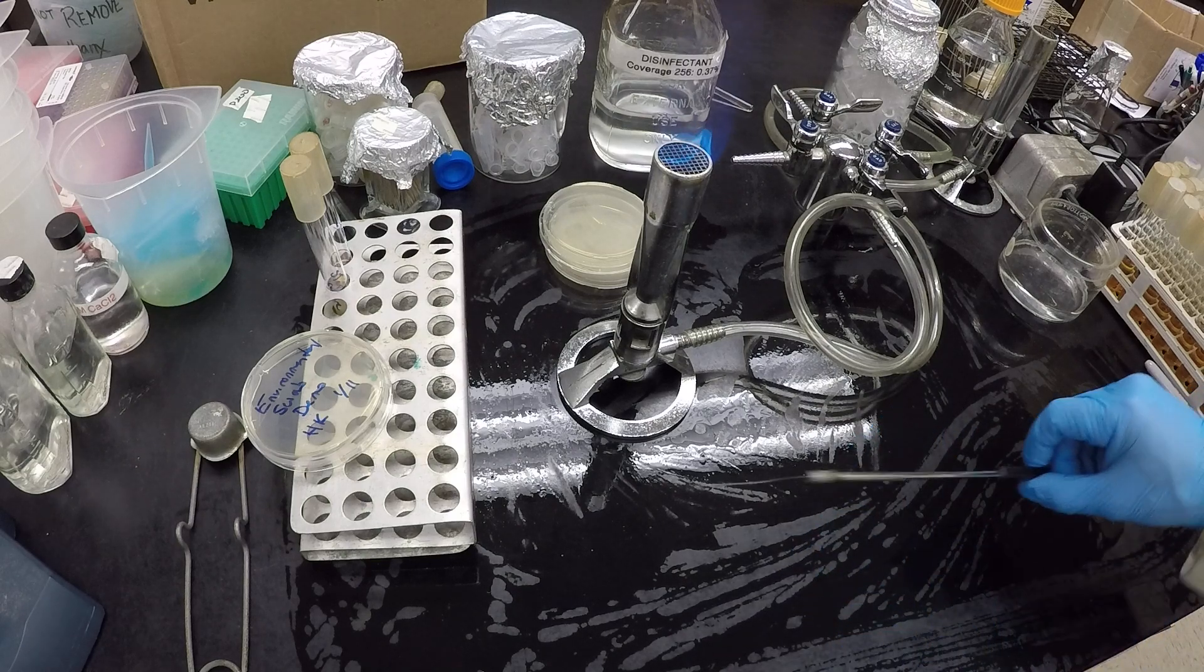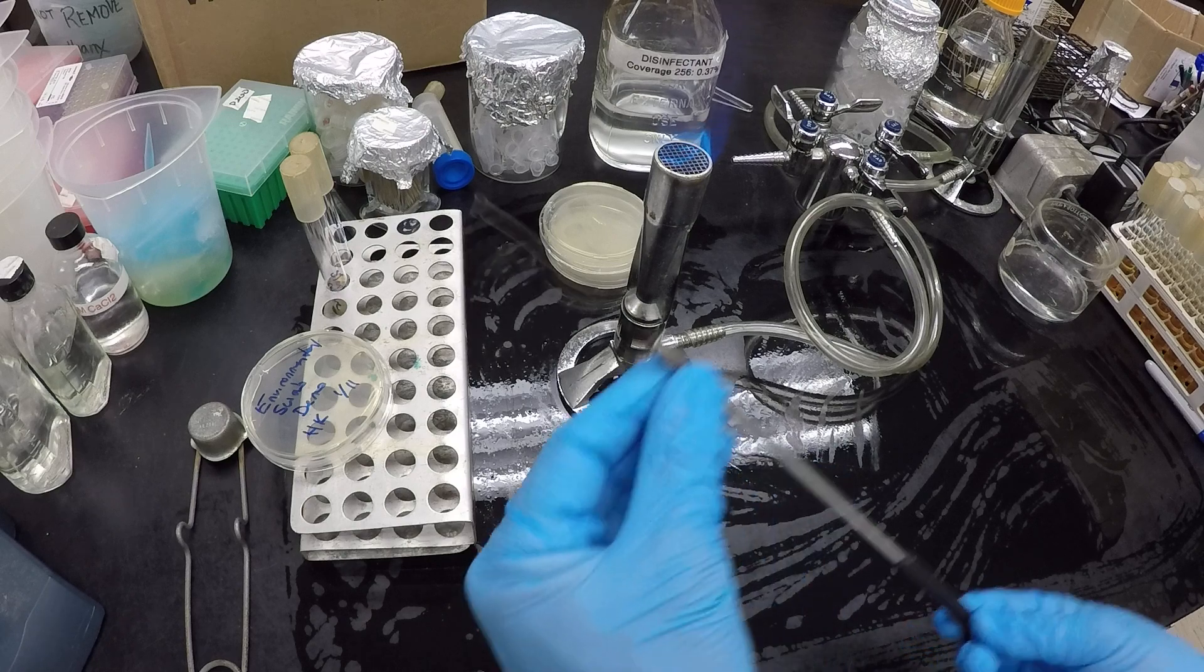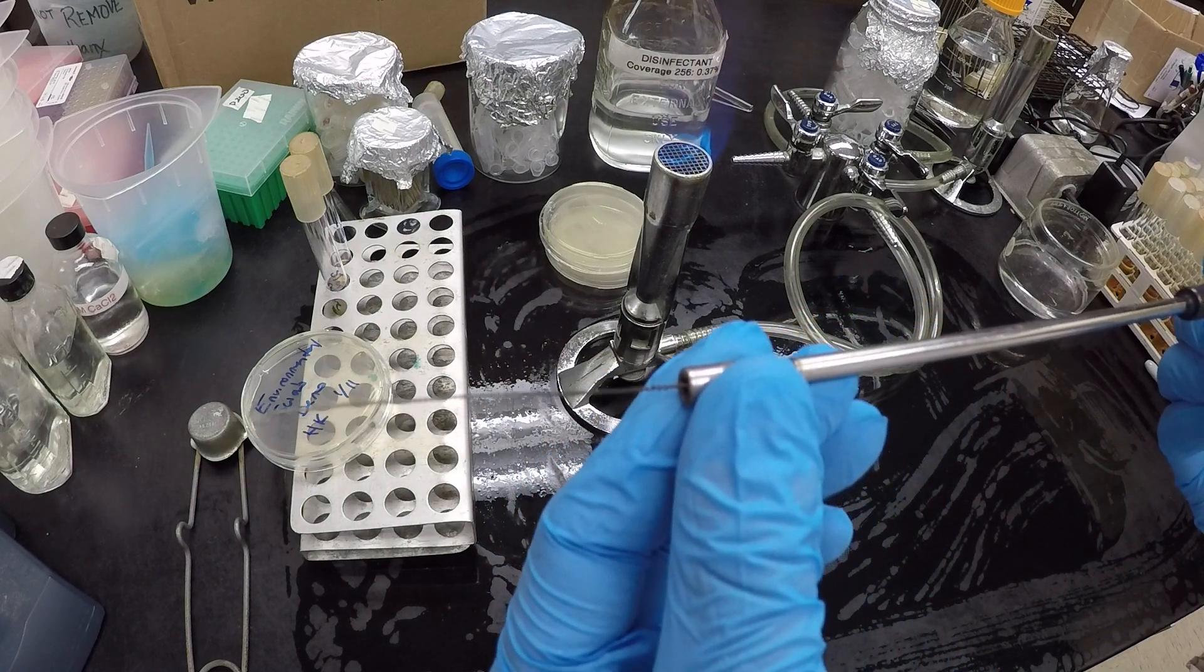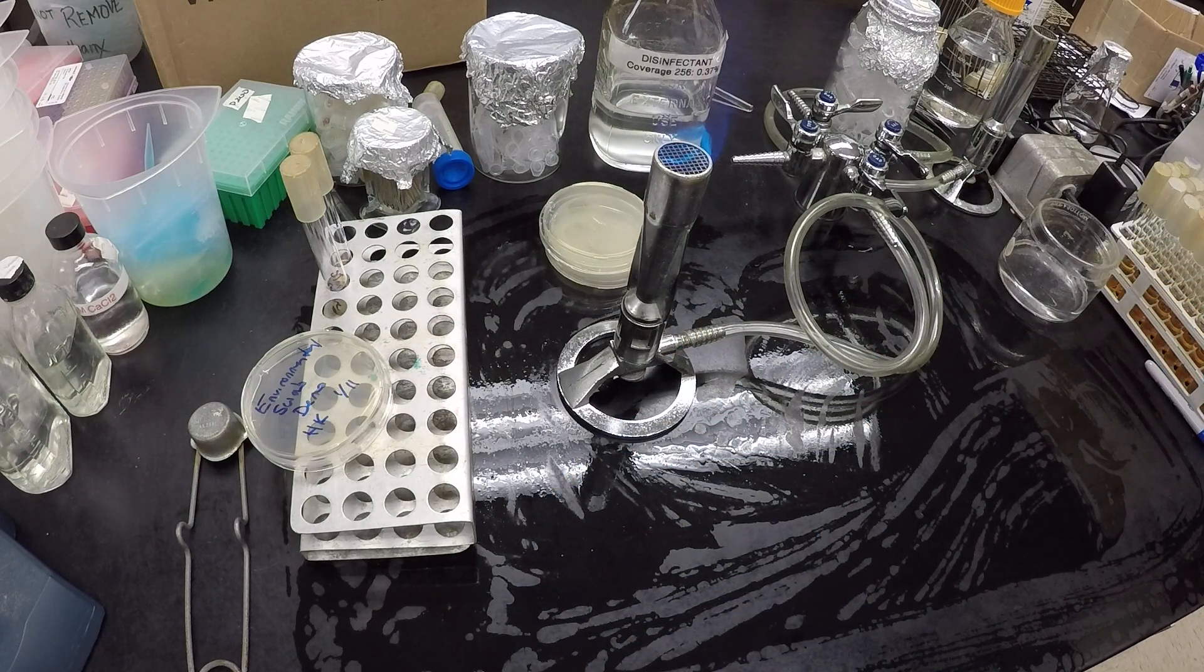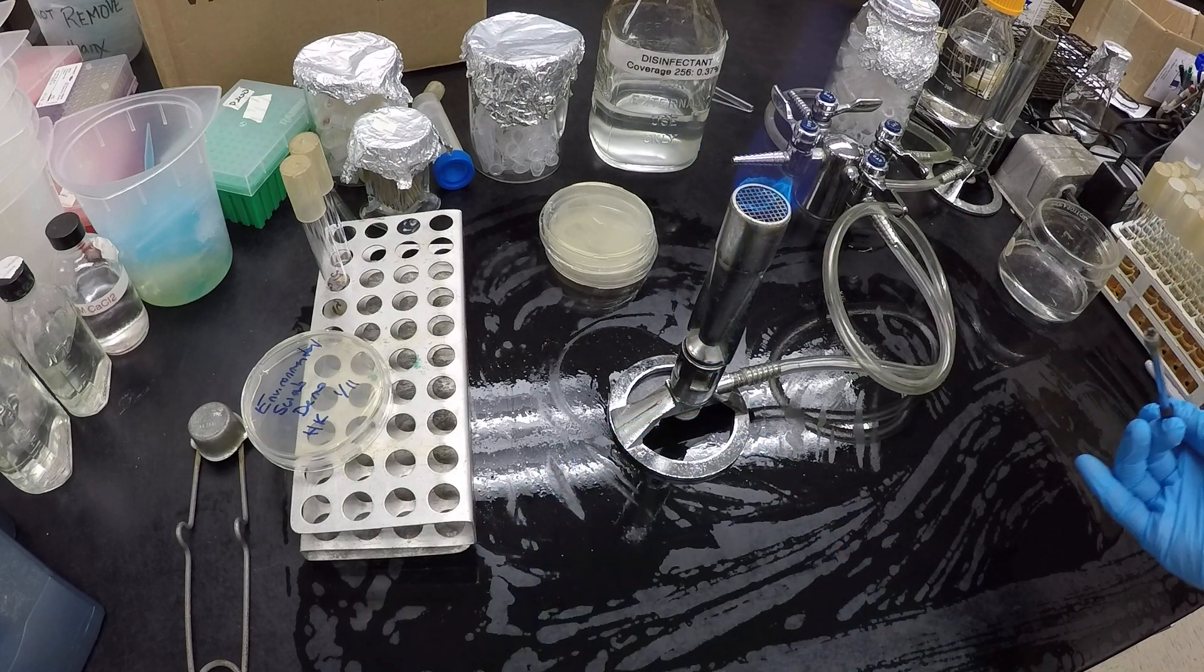The third is the tools that we're going to use. And this is our sterile loop. Oh, sorry, our loop. This is what we're going to use to manipulate bacteria with, and we will see this many times throughout the semester. In order to sterilize this, we want to make sure that we stick it in our Bunsen burner, which we learned how to light on the first day of class.